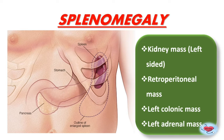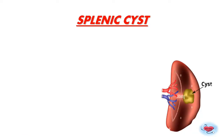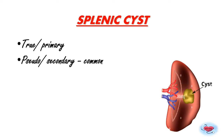Splenic cysts can be true primary cysts or pseudocysts. True primary cysts are lined by squamous epithelium and can be parasitic or non-parasitic. Pseudocysts have no epithelial lining. Pseudocysts (secondary cysts) are more common, accounting for 80%, while true primary cysts represent only 20% of cases.